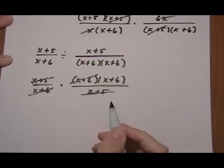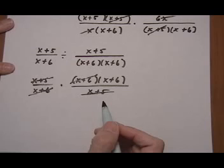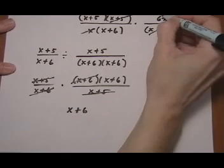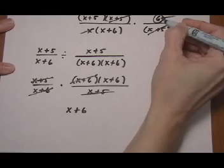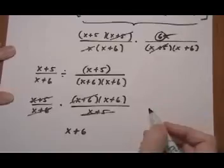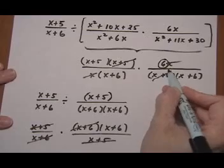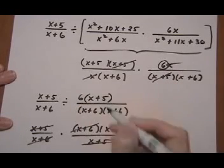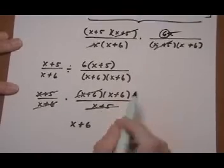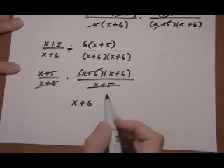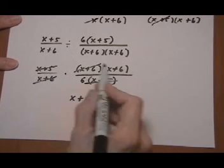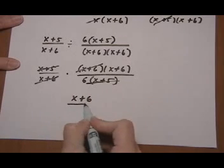And we're left with a single x plus 6. I think I forgot a piece somewhere — yes I did, this guy right here. This guy should have been part of the numerator. I'm going to put it right here because it should have multiplied across: 6 times x plus 5. Then when we did the flipping, it should have been right down here. After the canceling is all done, that 6 is still there because nothing cancels with it.